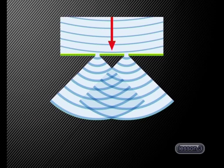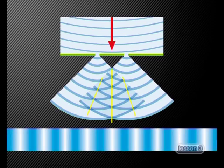The waves from the two slits will interfere with each other. When they fall onto a screen, there will be some areas where the waves are in phase with each other — in other words, their crests will coincide exactly with one another and so will their troughs. At these places, there will be constructive interference and we will see a bright patch on the screen.